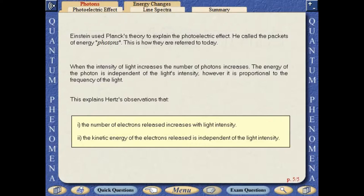This explains Hertz's observations that the number of electrons released increases with light intensity, but the kinetic energy of the electrons released is independent of the light intensity.